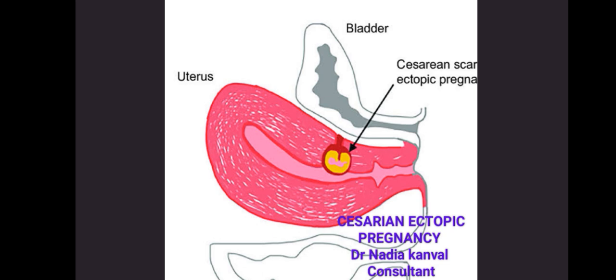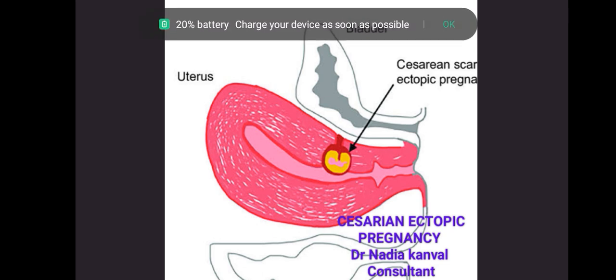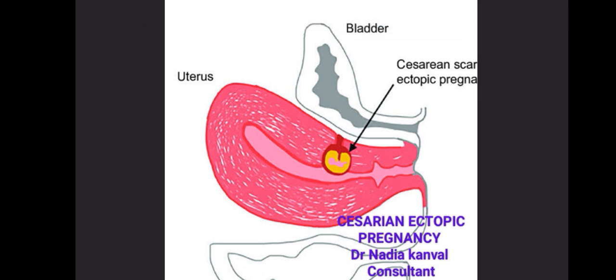So what is Caesarean Ectopic Pregnancy? A patient who is having previous surgical scars or Caesarean sections, if the pregnancy is implanted in the previous Caesarean scar, then she is going to have Caesarean Ectopic Pregnancy. It is a very rare form of pregnancy, occurring in about 1 in 2000, and is associated with increased morbidity and mortality.